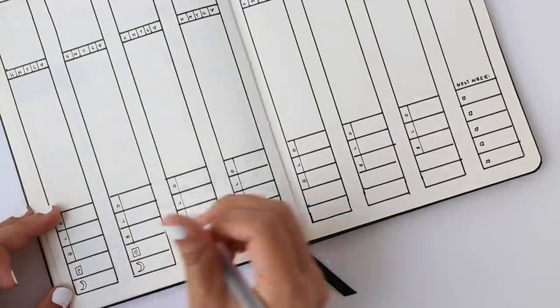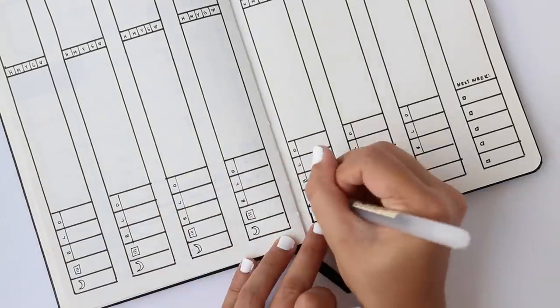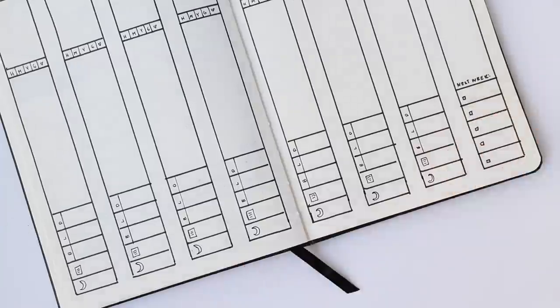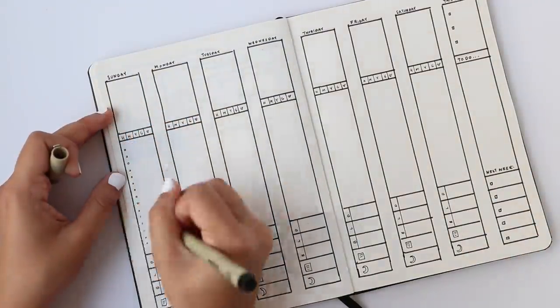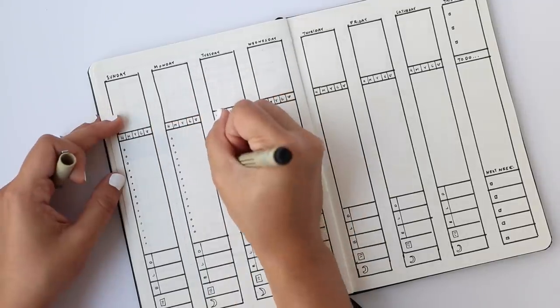Then there's a section in the middle for all your to-dos and then below that is where your breakfast, lunch, and dinner planner live and also a section to write down how many hours you studied that day and how many hours of sleep you got.